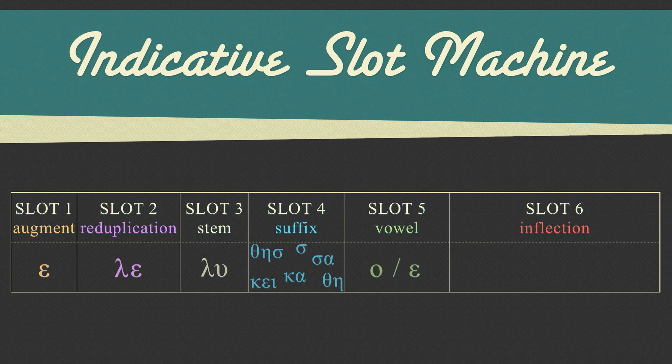Finally, slot six contains our inflected endings. There are two sets of endings, primary and secondary, and both sets have endings for active voice and another set for middle or passive voice. The inflected endings indicate person and number of a verb and help to identify voice as well.